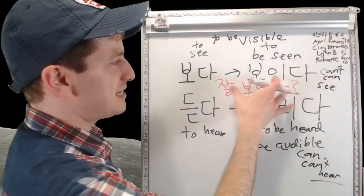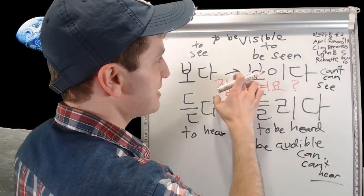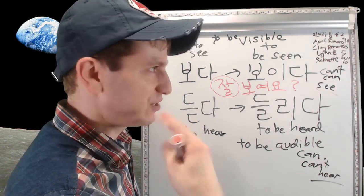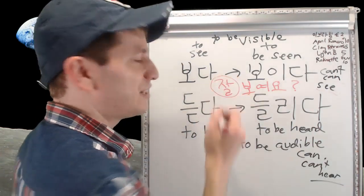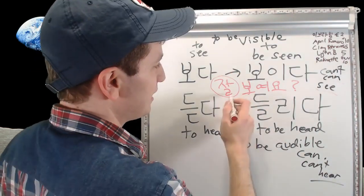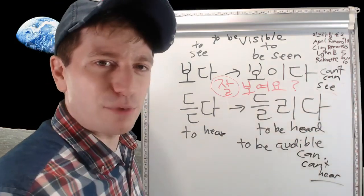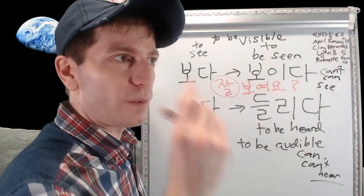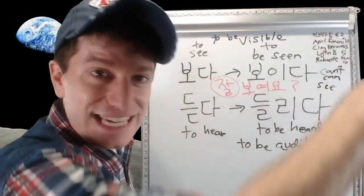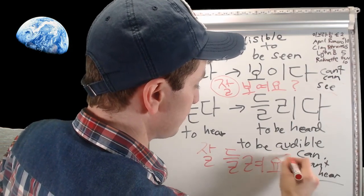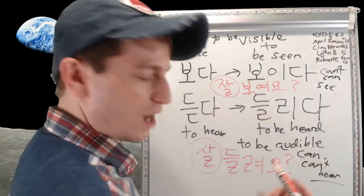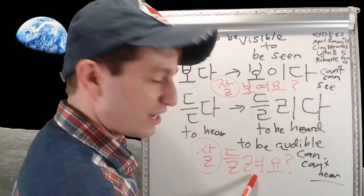잘 보여요? literally means 'Is it seen well?' — really asking 'Can you see it well? Is it visible?' Here 잘 means 'without difficulty.' For example, at a concert where people are standing in front of you, your friend might ask 잘 보여요? (Are you able to see it?) Similarly, on the phone: 잘 들려요? means 'Can you hear me now?' These are common ways to ask if someone can see or hear something.